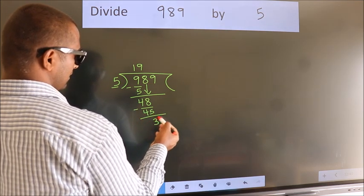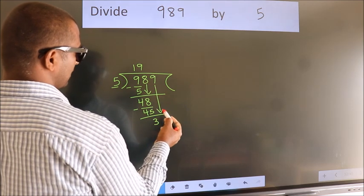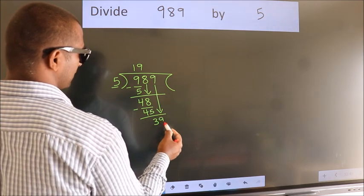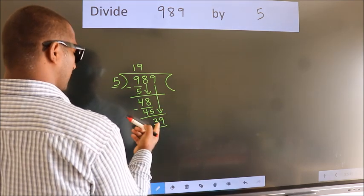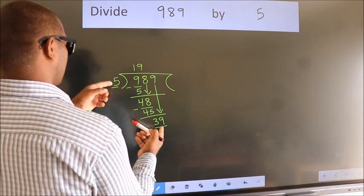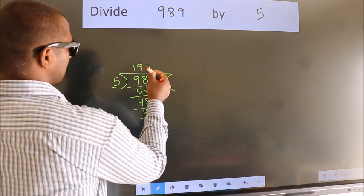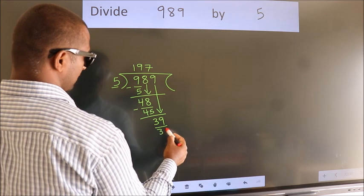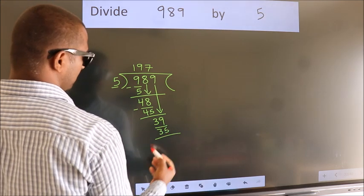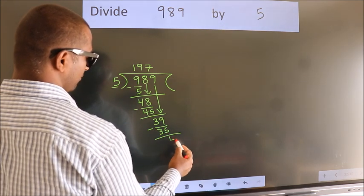After this, bring down the beside number. So 9 down, so 39. A number close to 39 in 5 table is 5 sevenths 35. Now we subtract. We get 4.